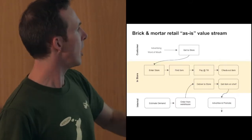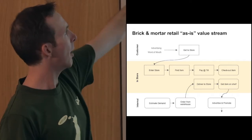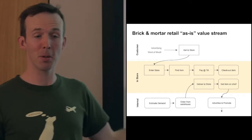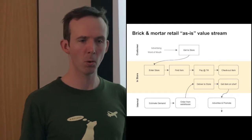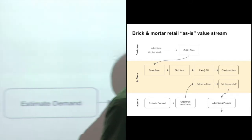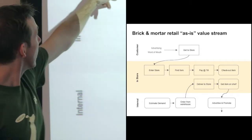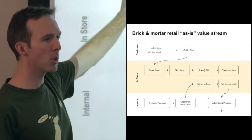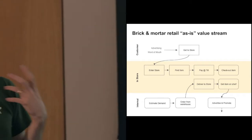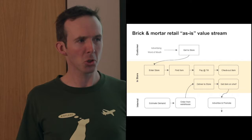Here's a fabricated example - a brick and mortar retail as-is value stream. Internally, up front, they need to estimate demand, guess how much people are going to want based on stats, always over-order and have sales. Then order from the warehouse, get it delivered to the store, get the item on the shelf, and advertise and promote the item. Then the customer needs to get to the store, enter the store, find the item, and queue at the checkout. It's a process, right? You can look at timings between getting to the store and entering the store.